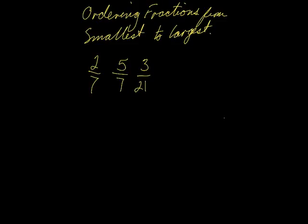In this video I'm going to show you how to order fractions from smallest to largest. We've got 2/7, 5/7, and 3/21. When you have to order fractions, you have to make sure that all the denominators are the same — that'll help you organize smallest to largest or largest to smallest simply by looking at the numerators.